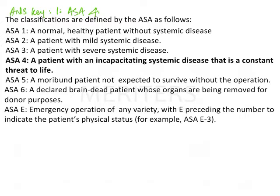ASA 1 is a normal healthy patient without any systemic disease. ASA 2 is a patient with mild systemic disease — for example, a patient with diabetes mellitus that is under control. ASA 3 is severe systemic disease — an example would be a patient suffering from diabetic ketoacidosis.